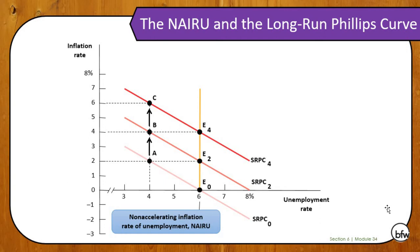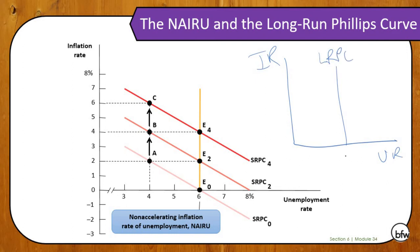The long run Phillips curve is actually a vertical line. On our graph with IR on the y-axis and UR on the x-axis, the long run Phillips curve is always placed at whatever our natural rate of unemployment is — in the United States, between 4% and 6%, or roughly 5%. We then draw our short run Phillips curve intersecting it there, so that if we are right at that intersection, our inflation rate would be 2%.